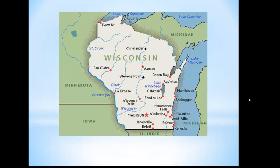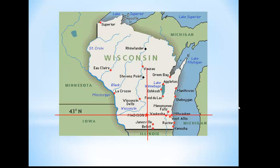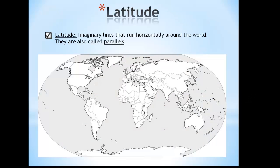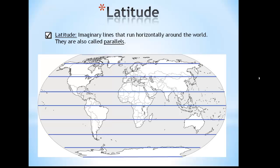For example, Madison, Wisconsin is located at 43 degrees north latitude by 89.5 degrees west longitude. Now, let's look at each set of lines separately. We will start with latitude. Lines of latitude run horizontally all the way around the world. You will notice these lines are all parallel, which means they never cross one another. Therefore, latitude lines are also called parallels.